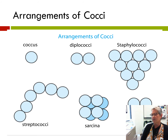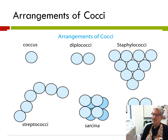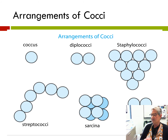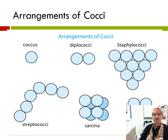Cocci also appear in different arrangements. They can be single and random, or in the diplo arrangement — two joined together, diplococci. They can appear as staphylococci, that is in a cluster looking much like a bunch of grapes. Or they can appear in that strep or chain arrangement, streptococci. Sometimes they appear as tetrads or sarcina. You should be familiar with these terms, in particular diplo, staphylo, and strepto.